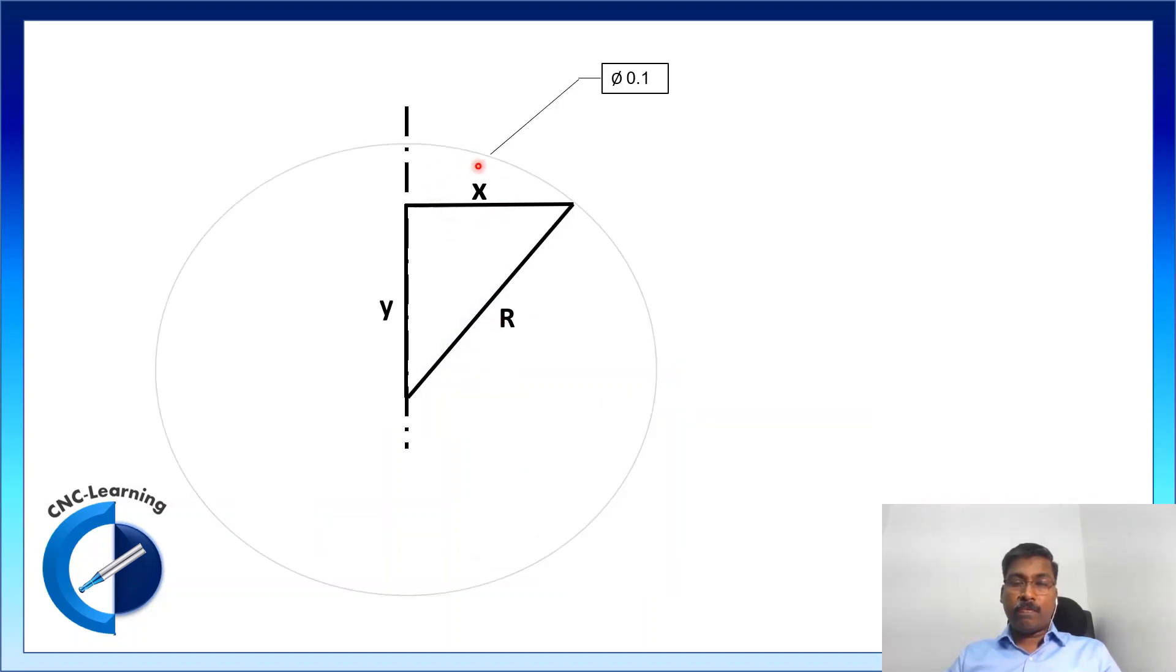So, the components of x and y we need to convert to diameter so that we can understand if it is just lying within the tolerance of diameter 0.1.